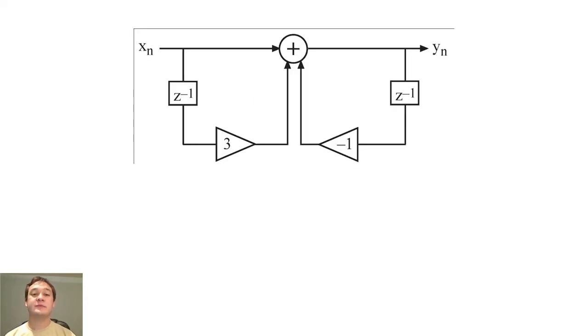The unit pulse response is the output of the system when the input is a Kronecker delta function, or unit pulse.